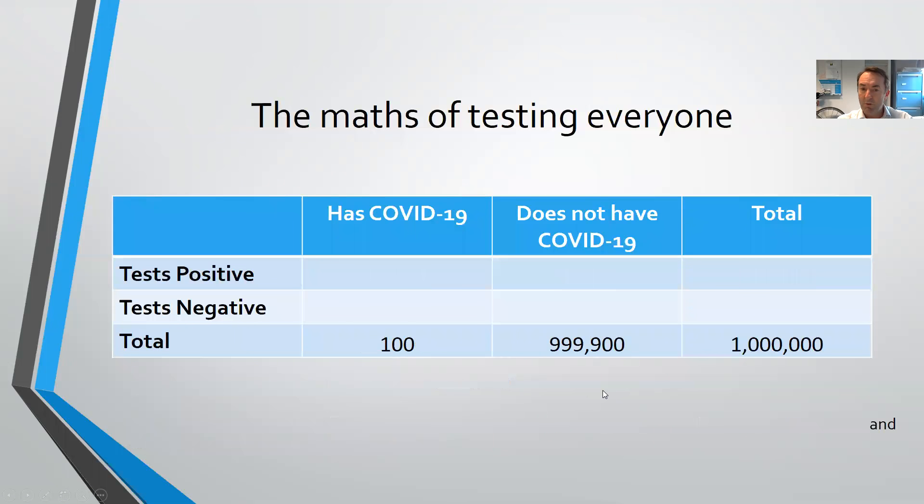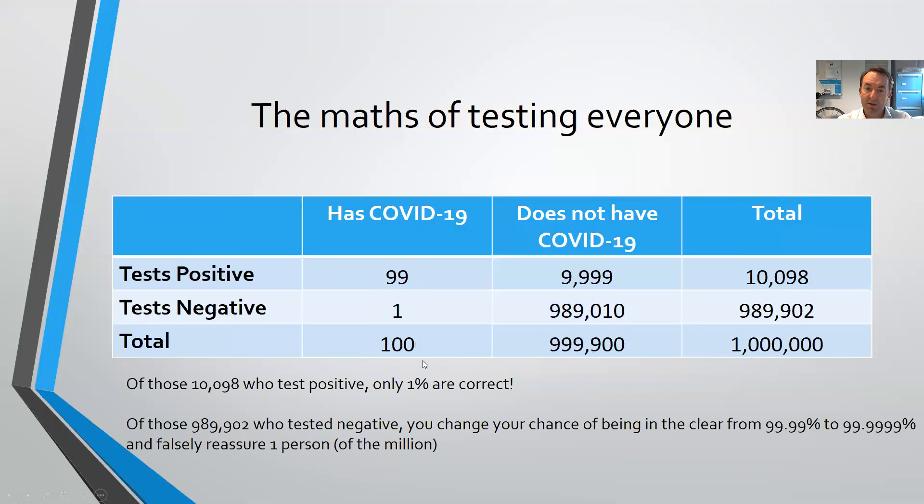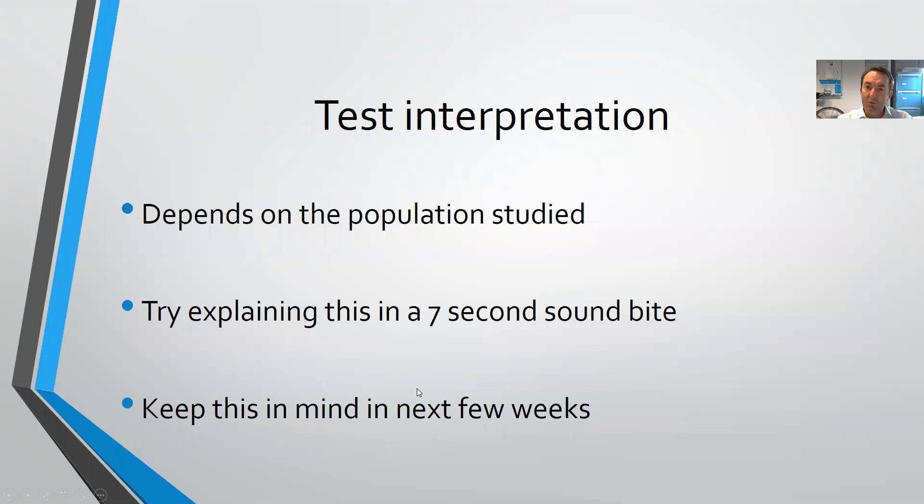What about taking it the other way? If there were a population of a million, but only 100 cases, and do the same calculations with the same figures, this time just over 10,000 will be positive, but only 1% of those are true positives, and the rest are false positives. So if you do these tests, you've got to think about the interpretation depends on the population studied.